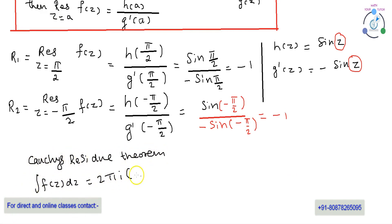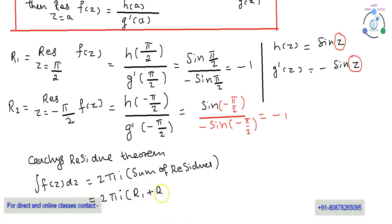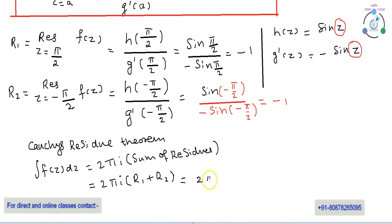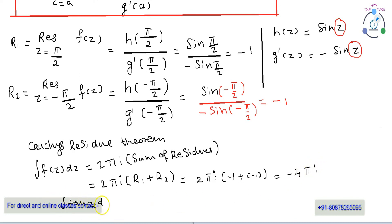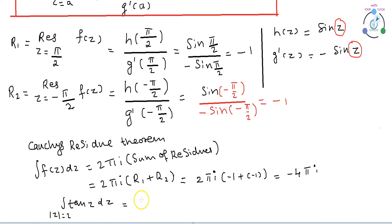Using Cauchy's residue theorem, ∮f(z)dz = 2πi × (sum of residues) = 2πi × (R1 + R2) = 2πi × (-1 + (-1)) = 2πi × (-2). Therefore, ∮tan(z)dz = -4πi.